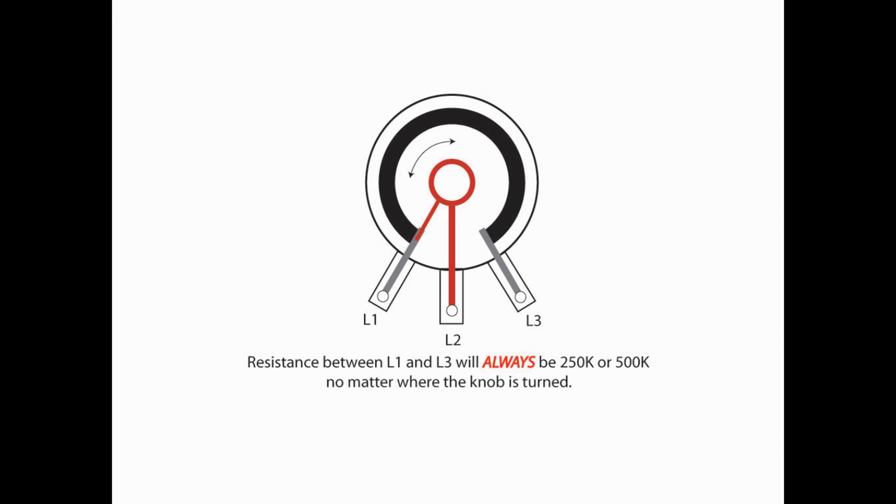Now, it doesn't matter what you do with the knob in terms of turning it to the left or turning it to the right, the resistance between L1 and L3 is constant. It will never change. What does change is the resistance between L1 and L2, or L2 and L3, and that's what I'm going to show you next.